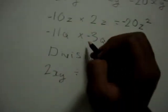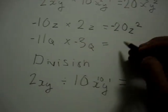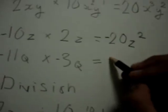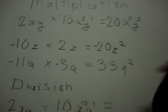Negative times negative would be positive, so write anything. 3 times 11 is 33q squared.